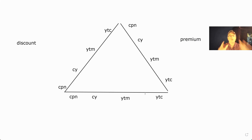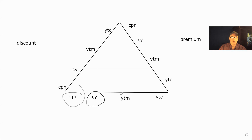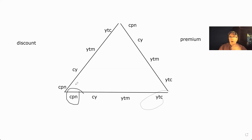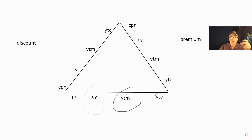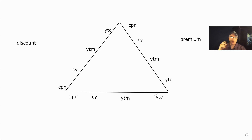Okay, so here's my triangle. Always remember the order from left to right is always coupon, current yield, yield to maturity, yield to call. Again: coupon, current, yield to maturity, yield to call. Remember that — that's left to right. Yield to call is always the last, coupon's always the first.